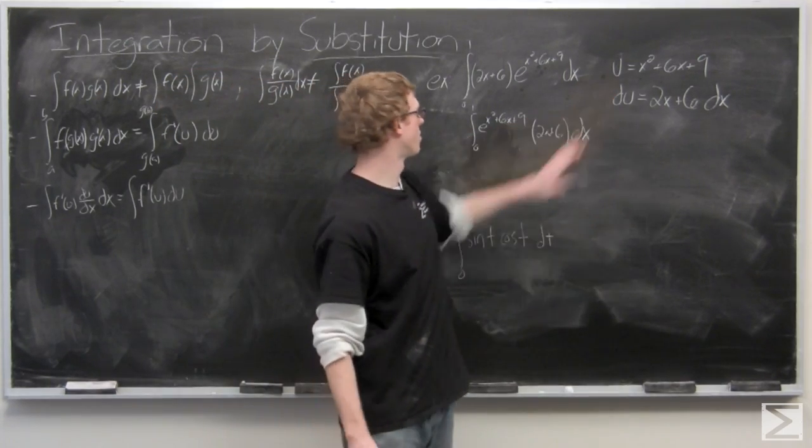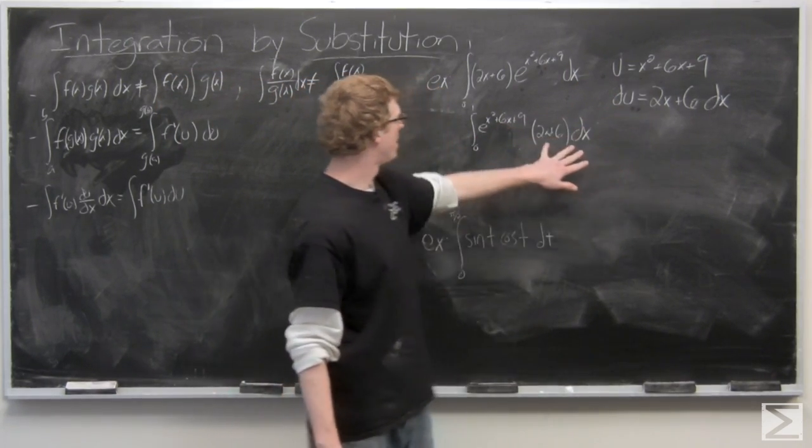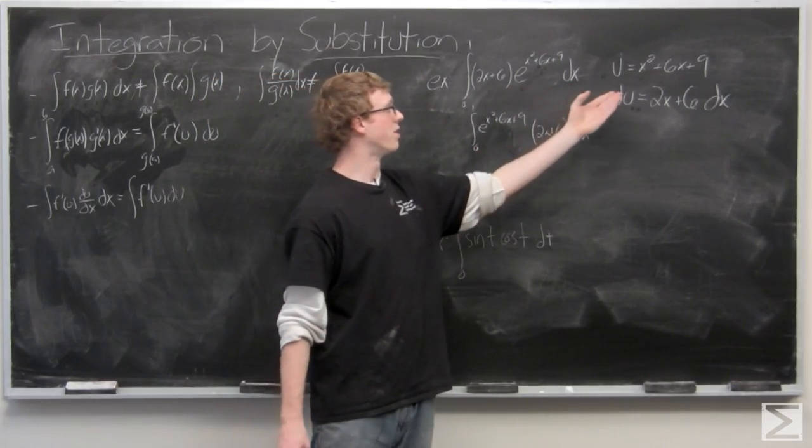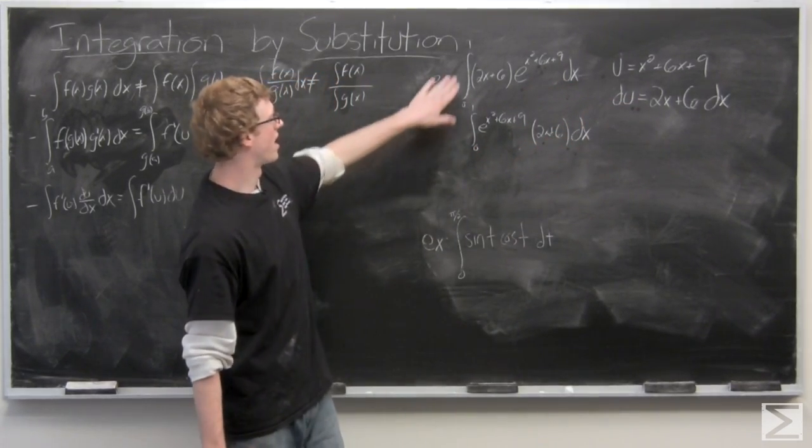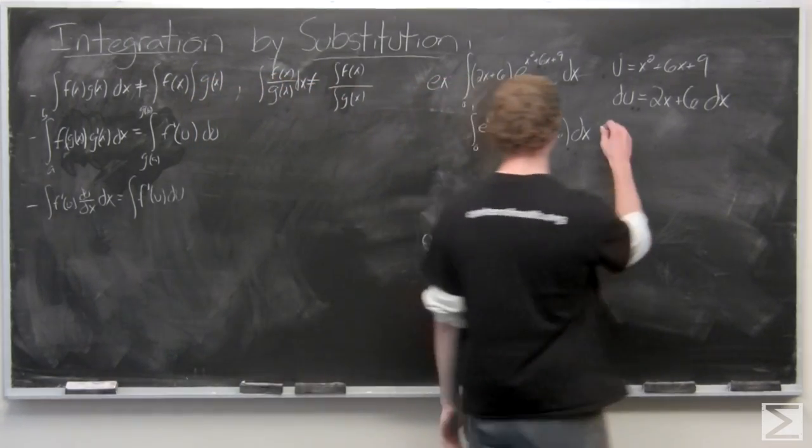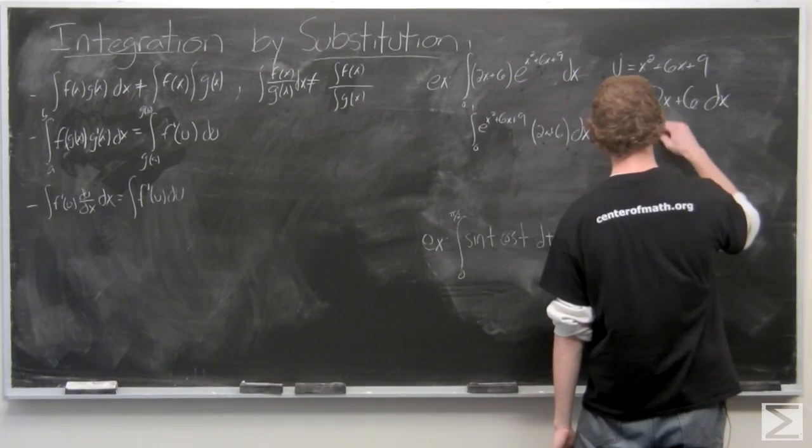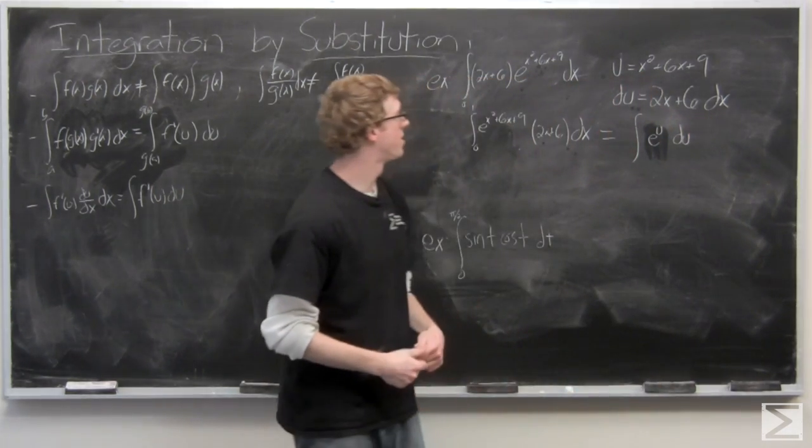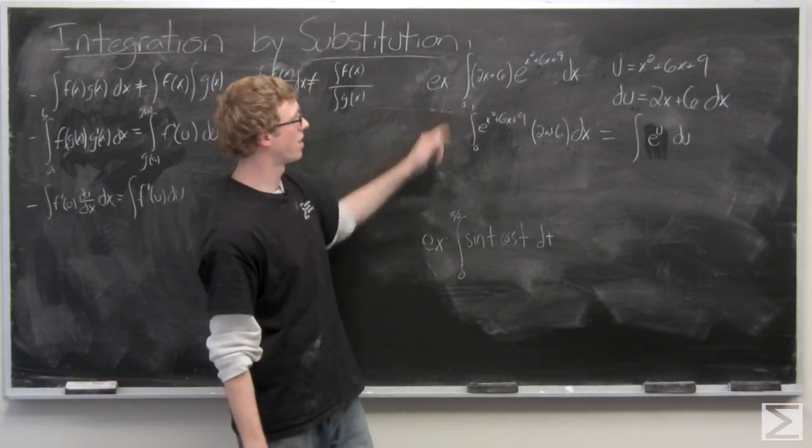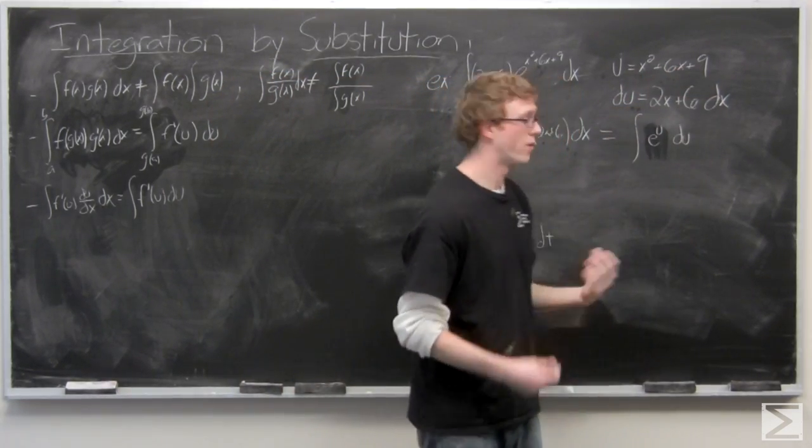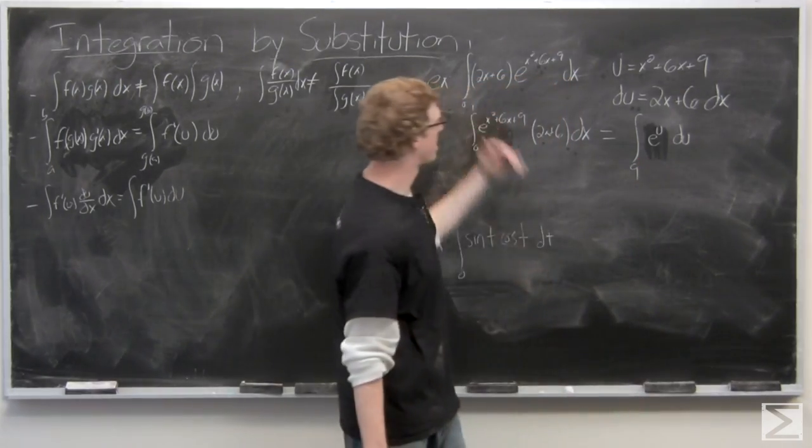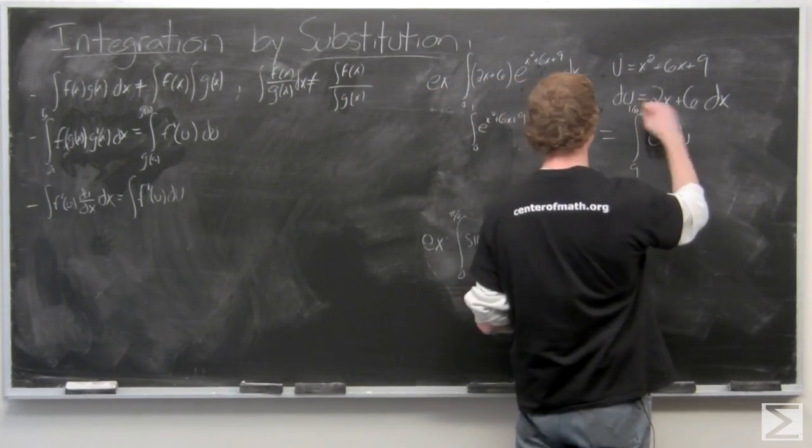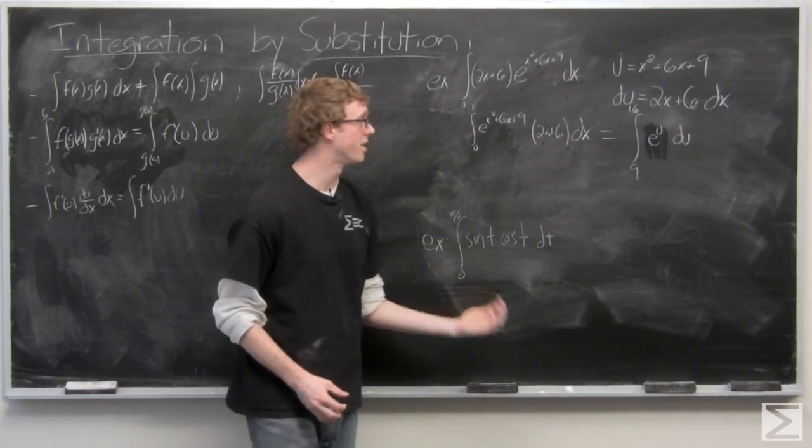Now, our substitution, we're going to go ahead and substitute in u here and du here. But we also need to change our bounds of integration because we have 0 and 1 here. But with u equals x squared plus 6x plus 9, it's not going to be 0 and 1 anymore. So, we'll complete our substitution first. And we need to find u when x equals 0. Just plug in 0. 0 plus 0 plus 9. So, our lower bound is 9. And x equals 1. 1 plus 6 plus 9. So, our upper bound is 16.